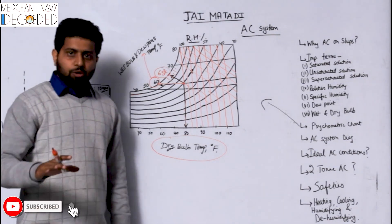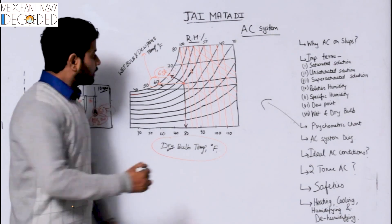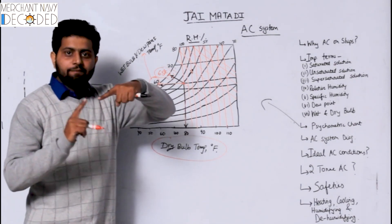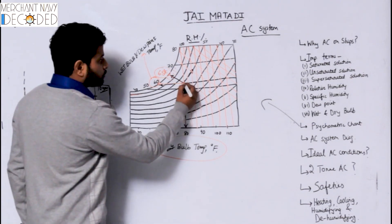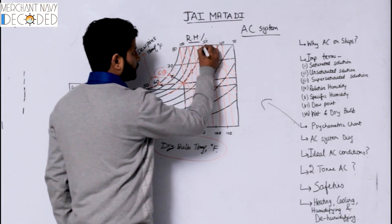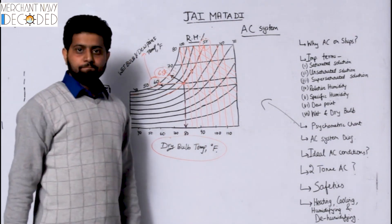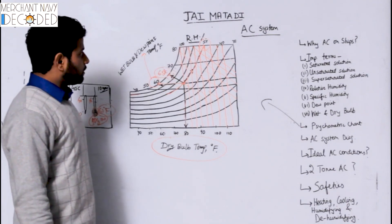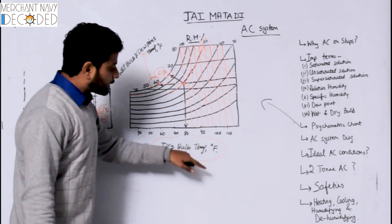There is a question: is the dew point a horizontal line, a vertical line, or what? It is a horizontal line. So by knowing your dry bulb and wet bulb temperature, you also know your dew point. And when you know this point, you follow the line and see it goes to a relative humidity of 50%. So you know the relative humidity and the dew point just from the wet bulb and dry bulb temperatures.